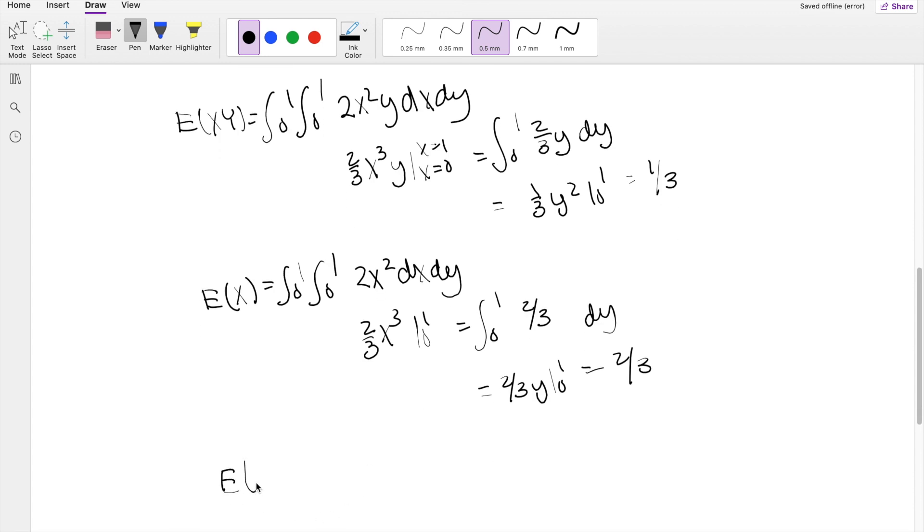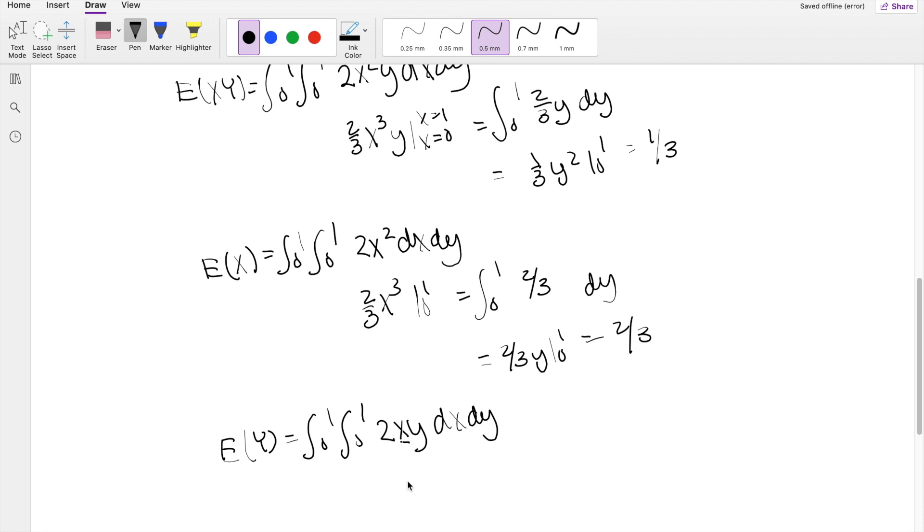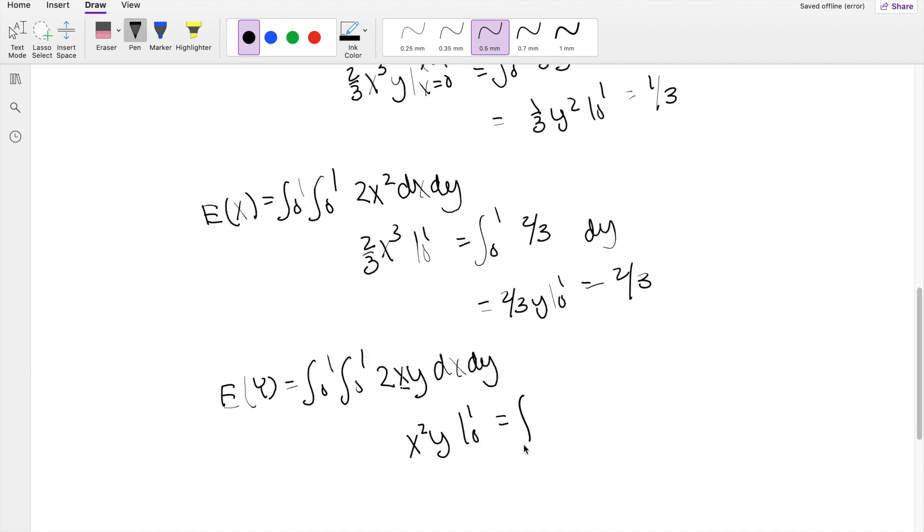All right, last one. Expectation of y. So this is going from 0 to 1. The range interval is still the same. But instead of multiplying by x or xy, we multiply just by y, dx dy. So integrating in respects to x, everything else is a constant. So this becomes x squared y, integrating x from 0 to 1. So then this is equal to integrating 0 to 1, y minus 0, such as y dy. So then this is equal to y squared, 1 half, integrating from 0 to 1. So you get 1 half.